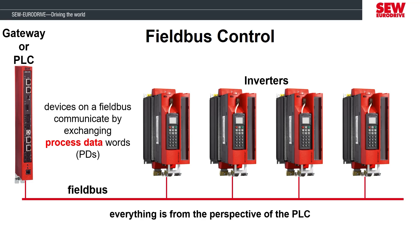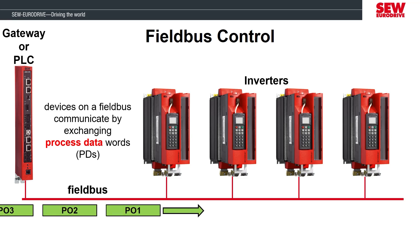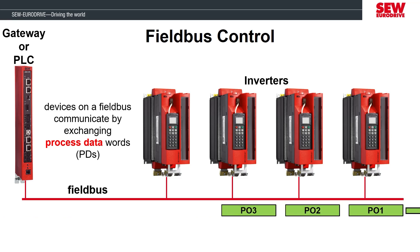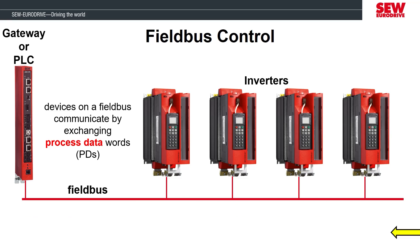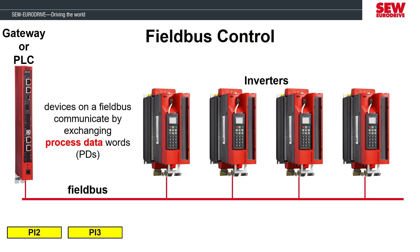There will be process data words going back and forth between all of the devices. The process data that comes from the upper level device to the downstream device are called process output words. And the downstream devices will send information back to the upper level device with process input words. The application module we'll demonstrate will have three process output words going to the upstream controller.